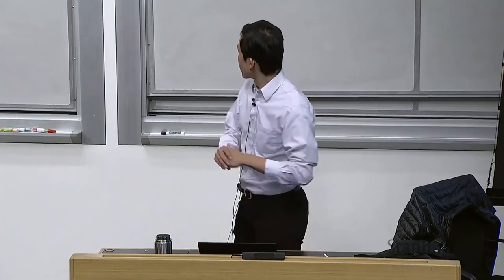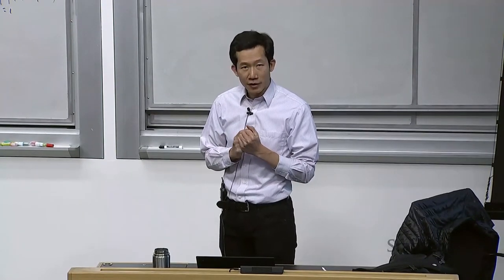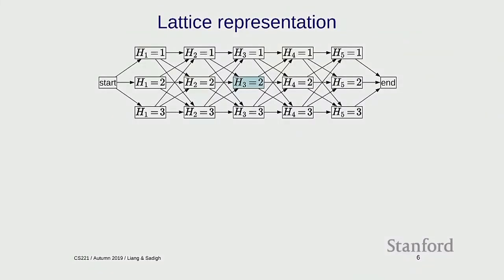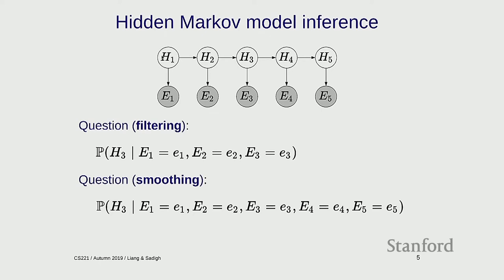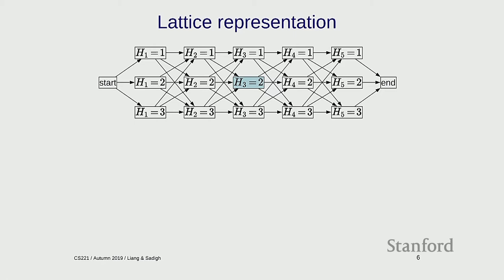To make progress, I'll introduce a lattice representation that gives us a compact way of representing the possible assignments. The reason this isn't trivial: if you have n hidden variables, there are 2^n or exponentially many possible assignments. You can't enumerate all of them, so you need an algorithm that computes things more efficiently.